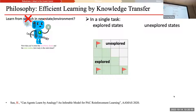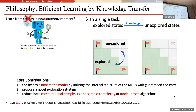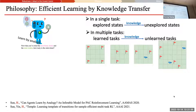Learning by analogy can happen at different levels. During a single task, the world has explored and unexplored states. Existing work encourages exploring the unexplored, but that is inevitably inefficient. The idea here is: rather than going directly to explore unexplored states, can we do knowledge transfer — transferring knowledge from explored states to unexplored states — to make learning much more efficient? This is a theoretically nice contribution reducing computational and sample complexity in model-based reinforcement learning. But this knowledge transfer also happens across multiple tasks.